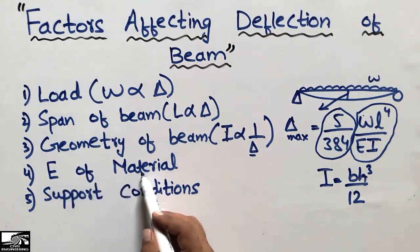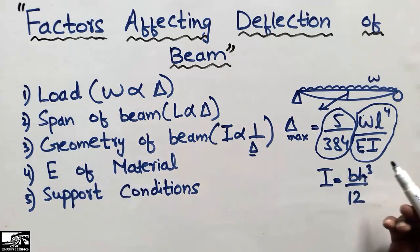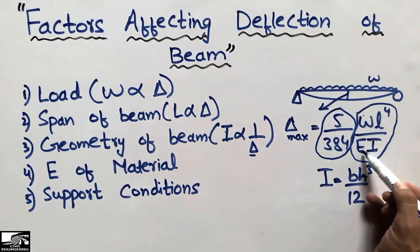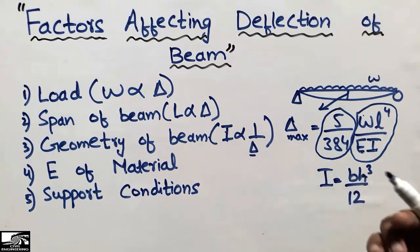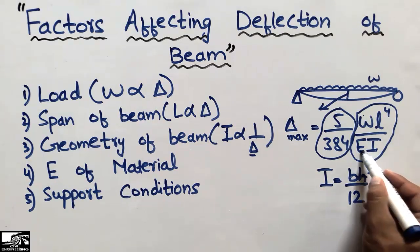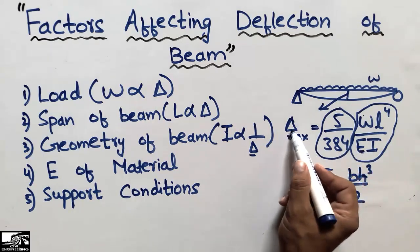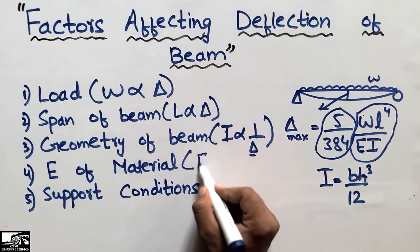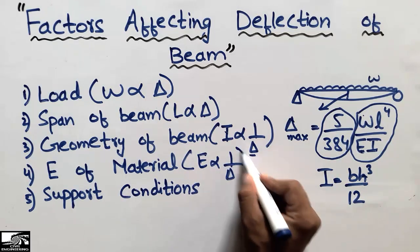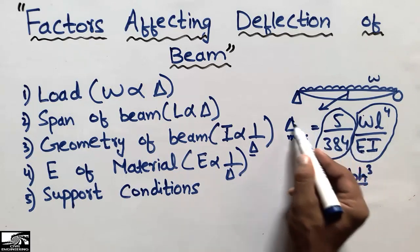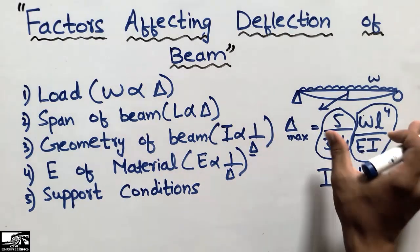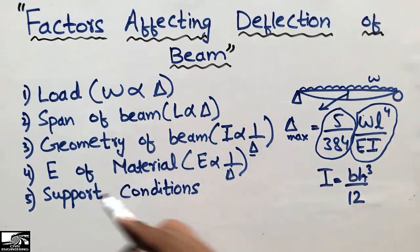The fourth factor is the elasticity of the material, represented by E. For example, in a reinforced concrete beam, it depends on the elasticity of the steel used. The more the elasticity of the material, the less the deflection — so E also has an inverse relation with deflection.